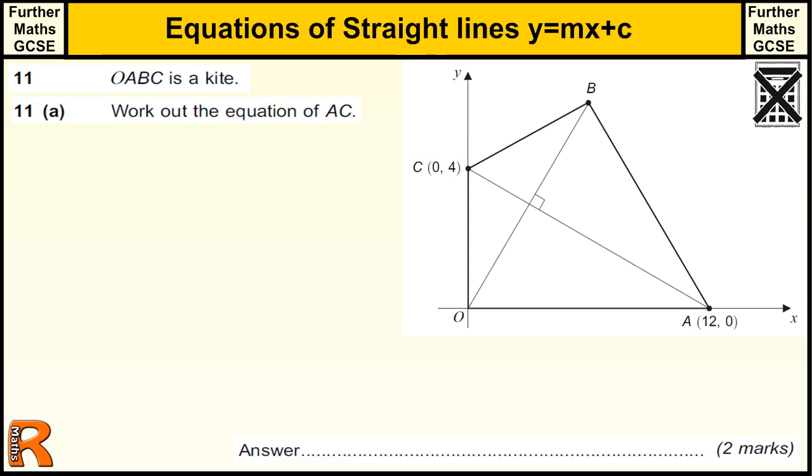Starting with part A, we want to work out the equation of this line here, AC. The equation of the line is going to be y equals mx plus c, where c is the point at which it crosses the y-axis, the y-intercept, which is the number four. So straight away we get y equals mx plus four.